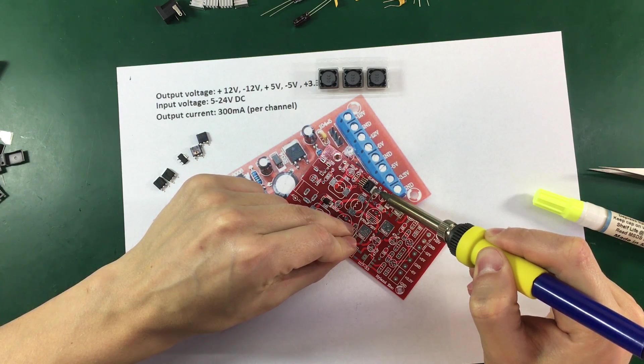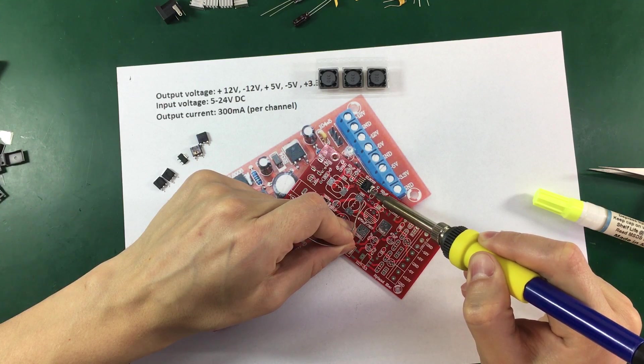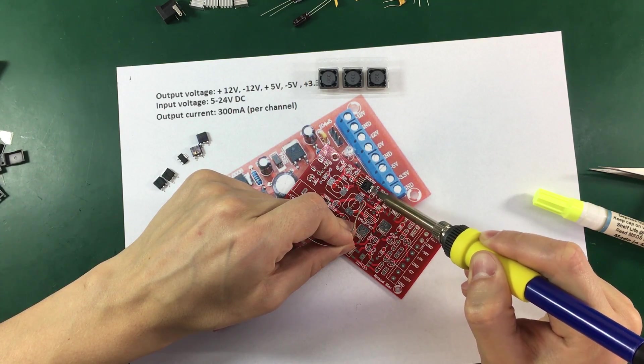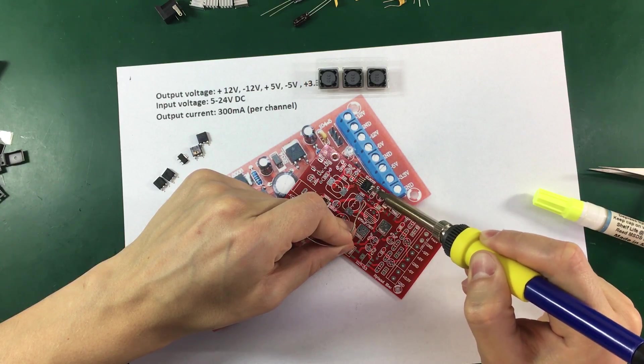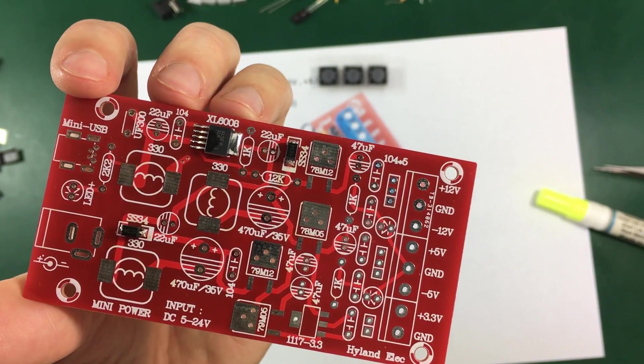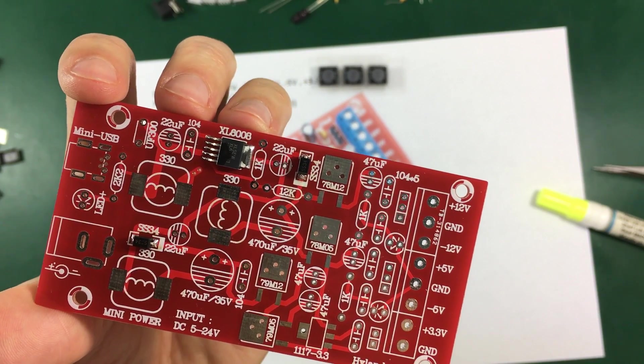This way solder will nicely flow even under the SMD package and secure the tab to the PCB. So this is how the XL6008 should look like when the soldering is done.